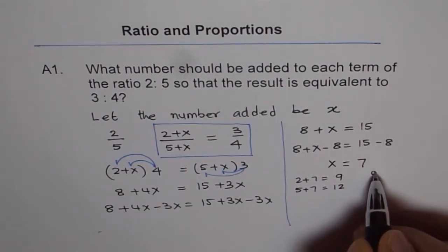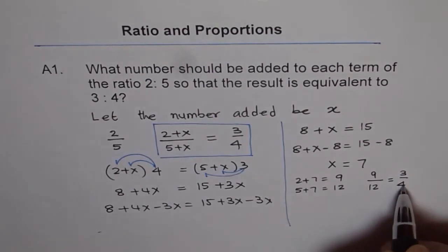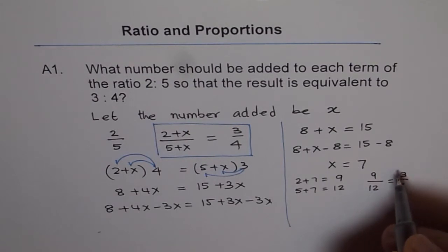9 over 12 is equal to, you can divide both by 3 and get 3 over 4. Do you see that? So, that is how you can get the ratio. 3 over 4. Do you see that?